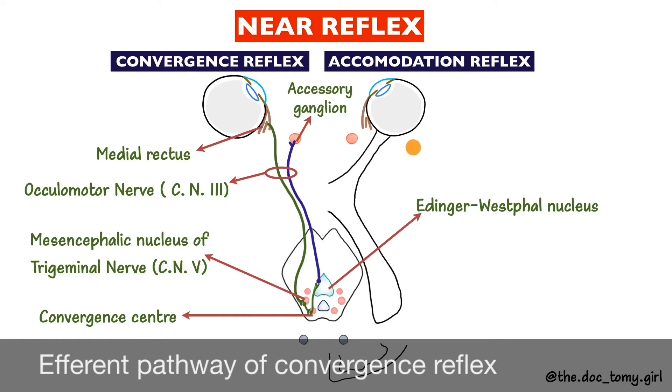The efferent fibers relay in the accessory ciliary ganglion before reaching the sphincter pupillae, resulting in constriction of the pupil.